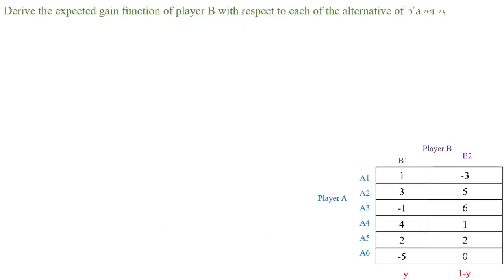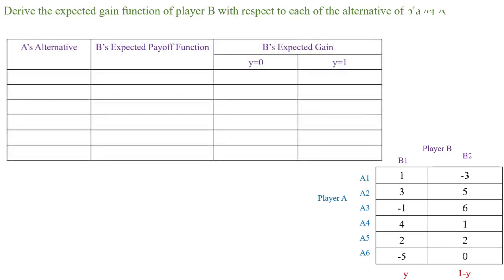Next, we find the expected gain function of player B with respect to each alternative of player A. For this, we draw a table with two columns: the first column is A's alternatives — player A has 6 alternatives — and the second column is B's expected payoff function.